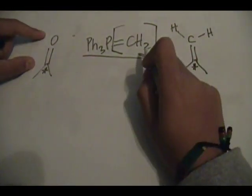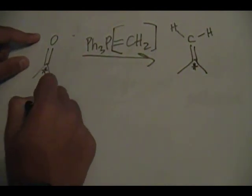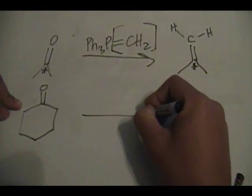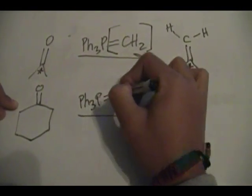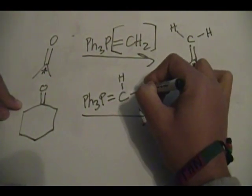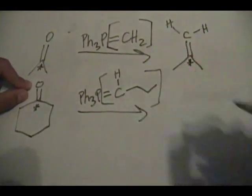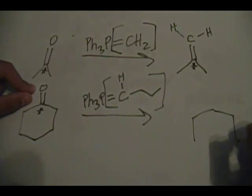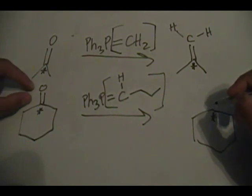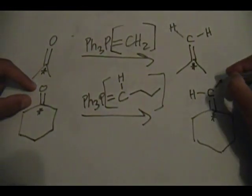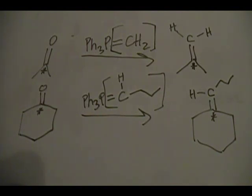Another example: let's just say we have this cyclohexanone reacting with another Wittig reagent, let's make it a little more complex. I'm just drawing the skeletal structure in this area. So identify your star carbon right there. What we'll do is replace the double bonded O with this thing here.